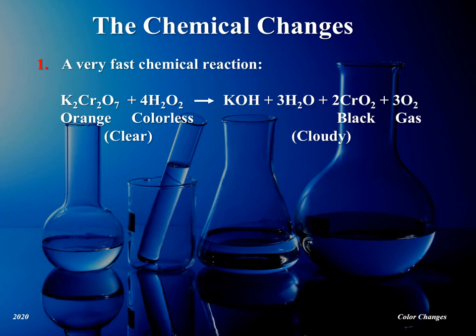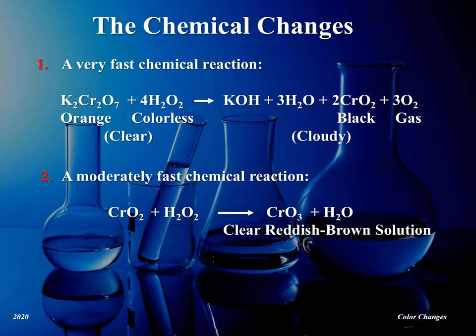As shown in the equation, oxygen gas and potassium hydroxide (KOH) are also formed. The second step is a moderately fast chemical reaction that takes place as the chromium dioxide reacts with hydrogen peroxide to give chromium trioxide, also called chromic oxide, with the formula CrO3, as shown in the equation. The chromic oxide is reddish brown and soluble in water, so the mixture becomes clear.